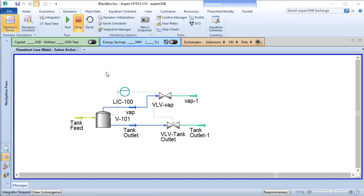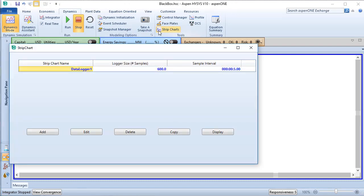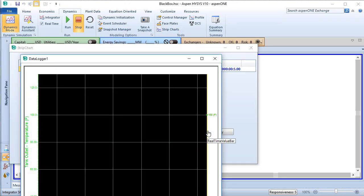Open the blackbox.hsc sample file. This file simulates a tank with a constant rate of inflow and outflow of water.